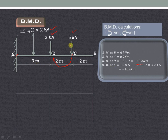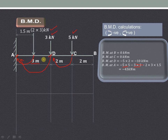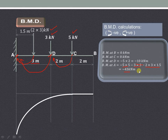So it is 5 into 5, and since it is clockwise it is negative. Then 3 into 3, because from D to A the perpendicular distance is 3, also producing clockwise moment. Then 6 into 1.5, also clockwise. The total bending moment at A is minus 43 kilonewton meter. Between A and D there was a UDL, so a parabolic curve is drawn for that region.